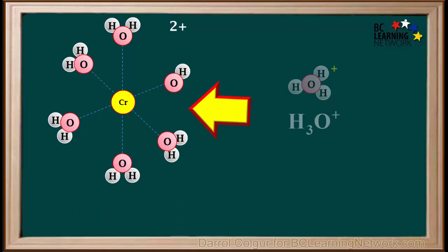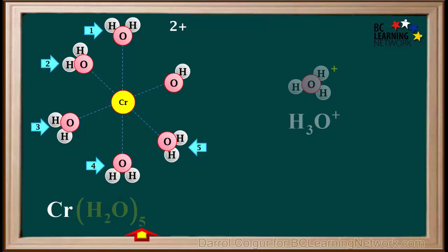We'll now focus on what's left of this ion, and have a look at its formula. We have one Cr atom. Notice we have 5 complete water molecules left. So we write H2O in brackets 5. The water molecule that was here lost a hydrogen atom. So now it's just an OH group. We have one OH group, so we write OH in the formula.